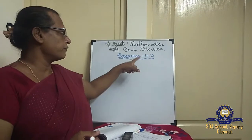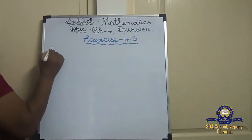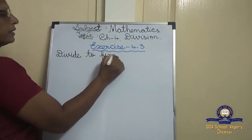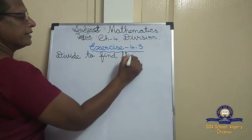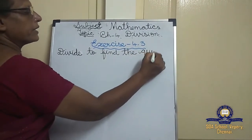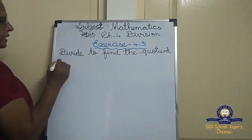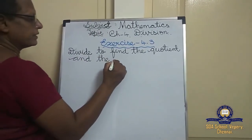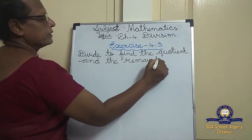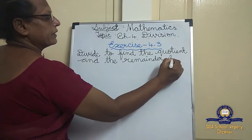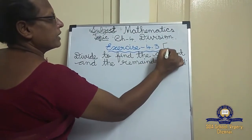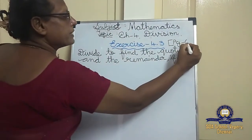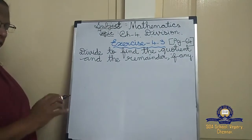Now exercise 4.3 — divide to find the quotient and the remainder. Find the quotient and the remainder, the same thing as we learnt in the last class, only with a single digit. Now it's two digits. It's on page number 64.